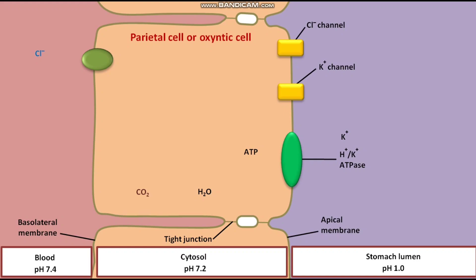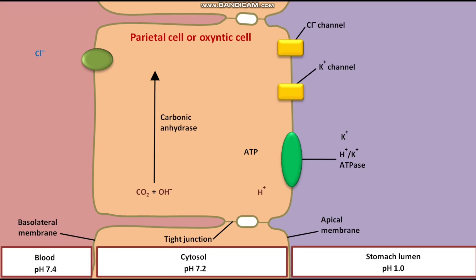The cytosolic H2O then splits into H+ ion and OH- ion. The OH- ion then reacts with CO2 in the presence of an enzyme called carbonic anhydrase to form HCO3- ion, or bicarbonate ion. The basolateral membrane has a Cl-/HCO3- anion antiporter.